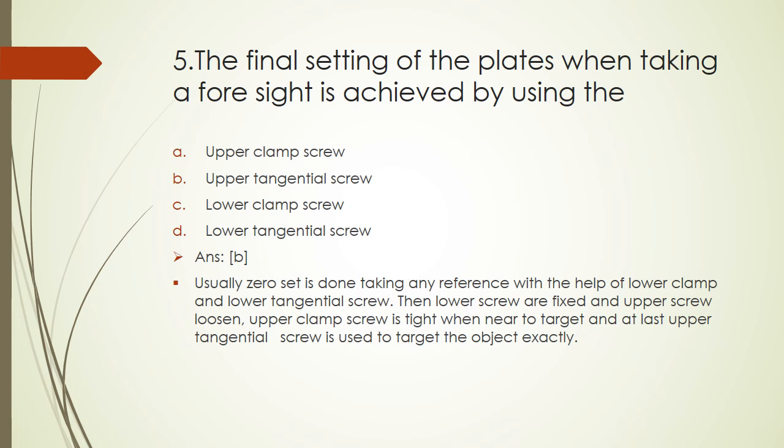Question 5: The final setting of the plates when taking off foresight is achieved by using: upper clamp screw, upper tangential screw, lower clamp screw, or lower tangential screw. The right answer is upper tangential screw. Usually we first set zero taking any reference with the help of the lower clamp and lower tangential screw, then lower screws are fixed and upper screws loosened. Upper clamp screw is tightened when near to the target, and at last upper tangential screw is used to target the object exactly at the certain point.